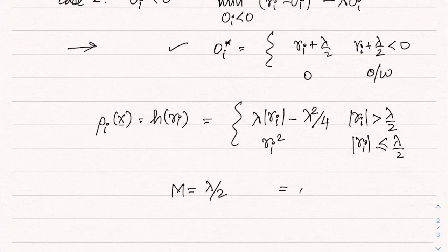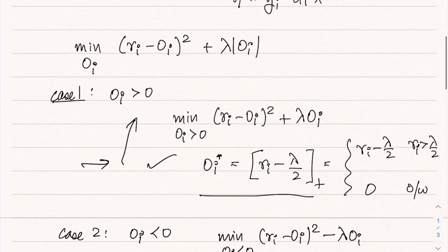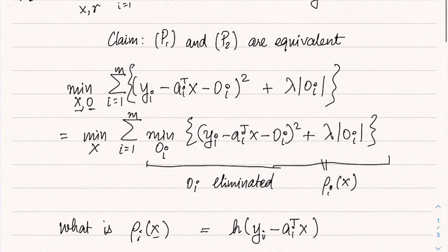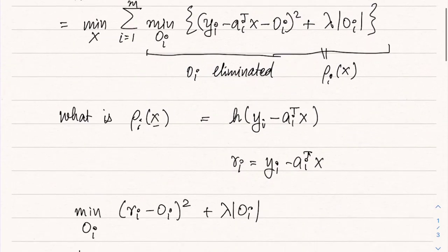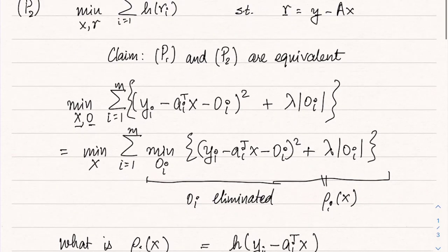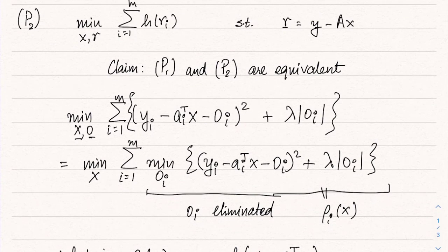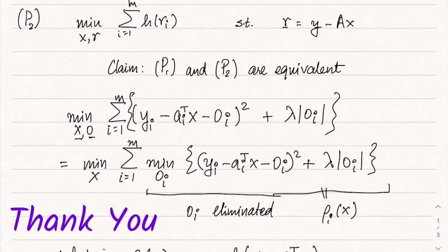In summary we have seen that the least square or the lasso-like formulation for removing the outlier contaminations can be converted by elimination of O_i into the Huber function formulation. So this is an interesting connection between a very classical estimator which is the Huber estimator and all the theory about M estimators and robust estimators built around Huber estimation and the modern use of L1 norm minimization for encouraging sparsity.